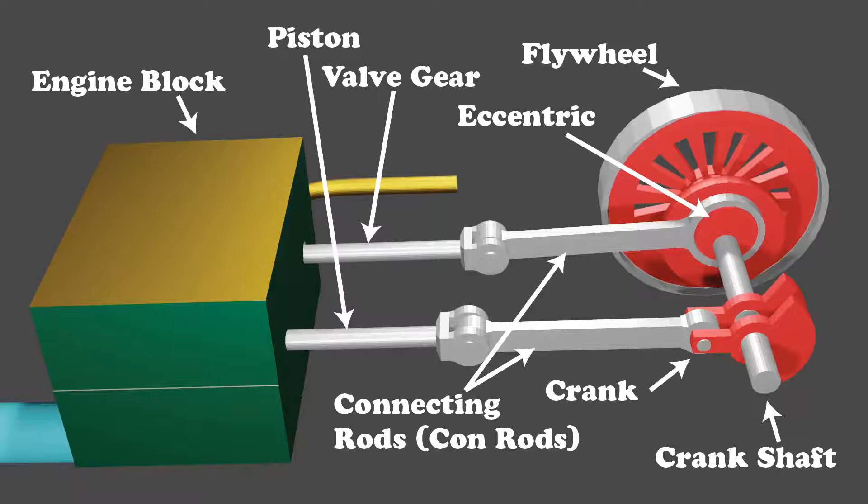The other device is known as the valve gear. This is connected to the eccentric through its own con rod.